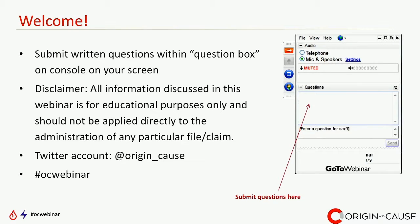Several of our clients have mentioned that they've used these in their staff meetings and got great feedback. We will be sending each of you a completion certificate in a follow-up email. For those not signed in under their own name but attending within a group, please email us at webinar@origin-and-cause.com and we'll have a completion certificate made up for you.